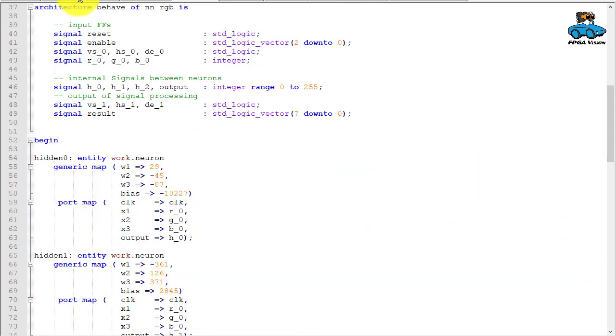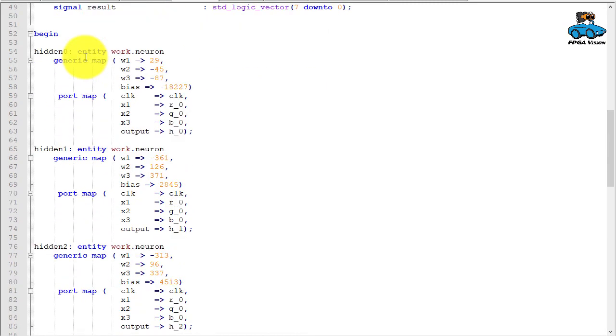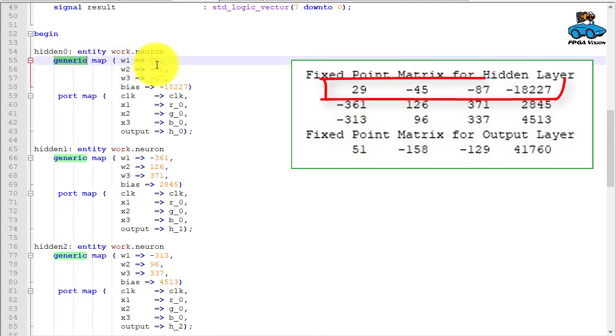Then we have signal declaration. Here are the neurons. We have 0, 1 and 2 submodules for the neuron with a generic map. Here we supply the values we got from the octave script.